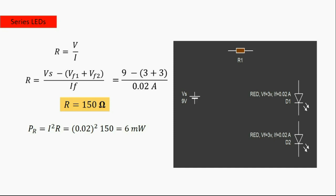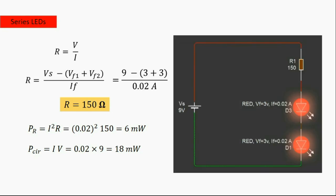The power of the resistor is 6 milliwatts, and we can select a quarter-watt resistor. The total power of the circuit is 18 milliwatts. Now you can use the resistor in the circuit — as you can see, the circuit is working.